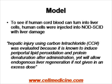Liver failure is induced by administration of a compound called carbon tetrachloride, which induces periportal lipid peroxidation in the liver of the mouse. In order to test the activity of human stem cells, they are administered into mice that lack an immune system — specifically lacking functional T, B cell, and NK cell compartments. These are called NOD/SCID mice. So the model is human stem cells into an immunocompromised mouse in which the liver was damaged by carbon tetrachloride.